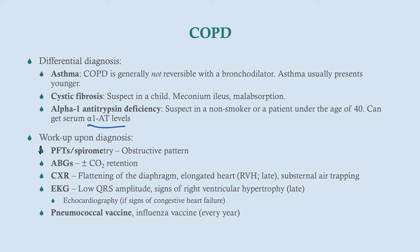Alpha-1 antitrypsin deficiency is easily tested with alpha-1 antitrypsin levels. The workup includes pulmonary function tests, arterial blood gases to look for CO2 retention, and chest X-ray where you'll see diaphragmatic flattening, possibly an elongated heart, and substernal air trapping. EKG is useful to look for low QRS amplitude or right axis deviation if right ventricular hypertrophy is developing — that is a late finding on the way to cor pulmonale. Echocardiogram is useful if there are signs of congestive heart failure or right ventricular hypertrophy. All patients should get the pneumococcal vaccine and the influenza vaccine every year.